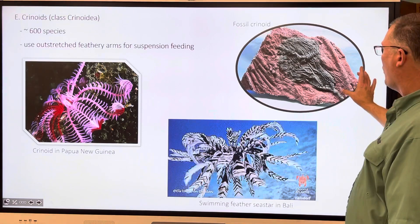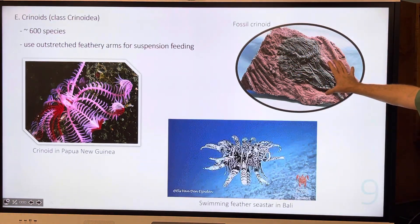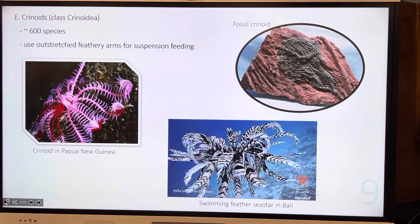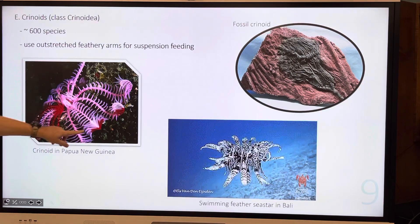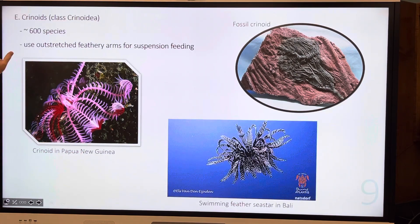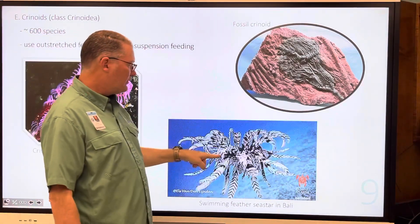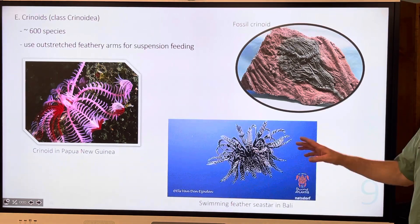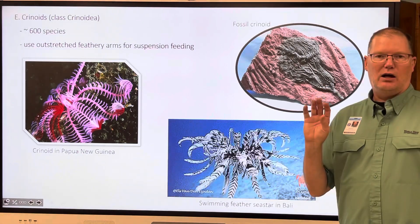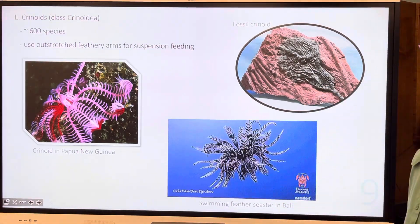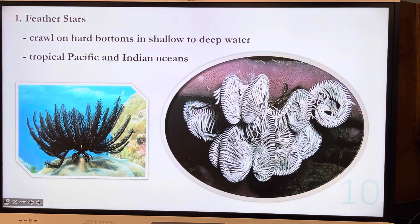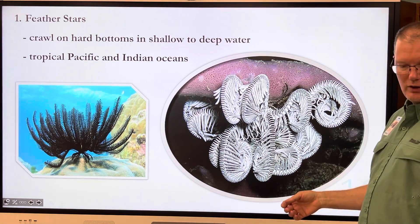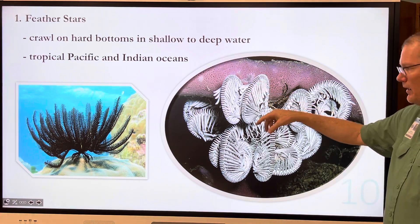Crinoids have been around for hundreds of millions of years — here's a fossil one. They look like plants, like flowers, but they're animals. There are about 600 species. They use their outstretched, feathery-type arms — this one's in Papua New Guinea — for feeding. Once in a while they will swim. Feather stars are one kind of crinoid, and they walk around on the bottom looking for prey. They're found in the Tropical Pacific and Indian Oceans — we don't have any of those here in Florida, unfortunately.